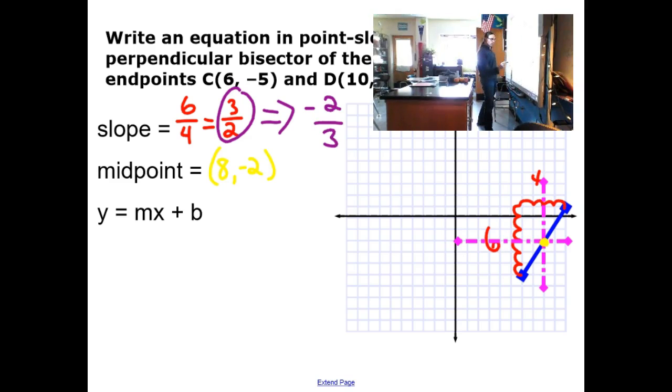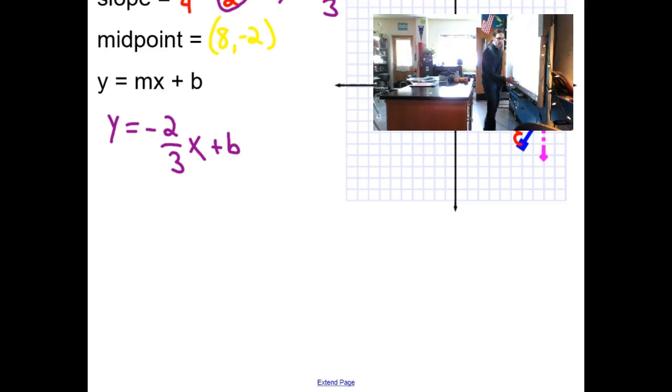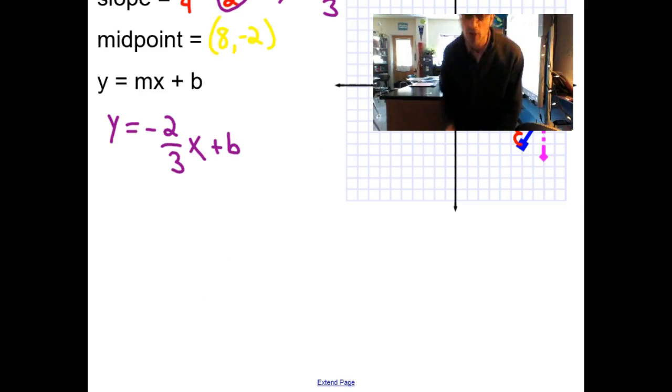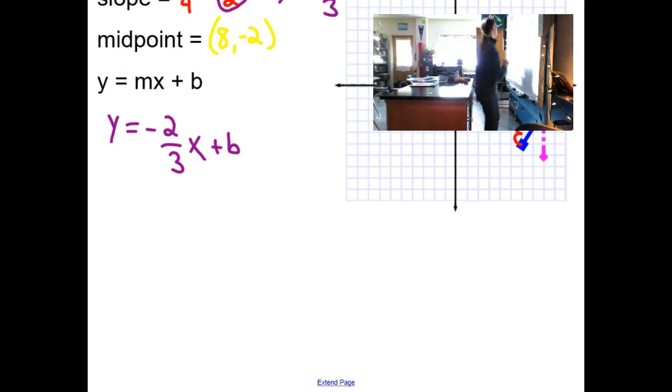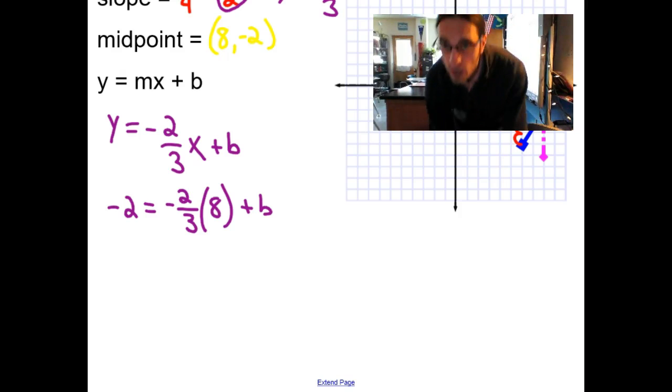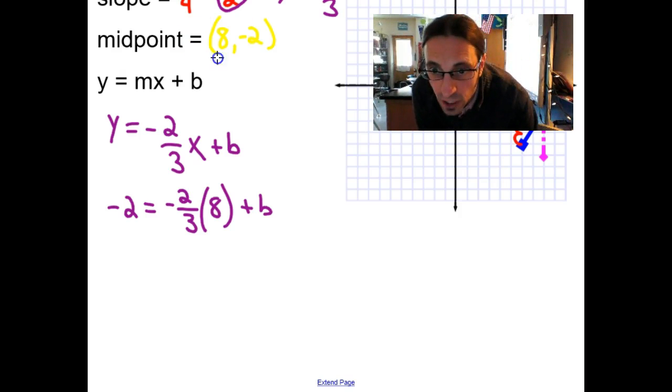And so now in my equation, I've got -2/3x + b equals y. And then I'm going to substitute that point (8, -2) into my equation. All right. So -2 is the y-coordinate. And then I'm going to put an 8 in here. And now I can solve it.